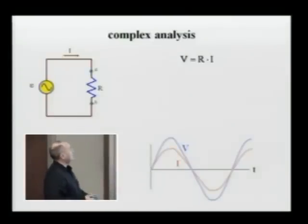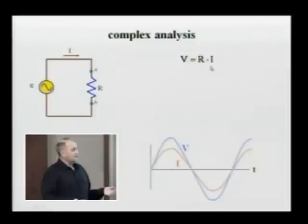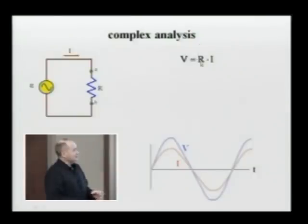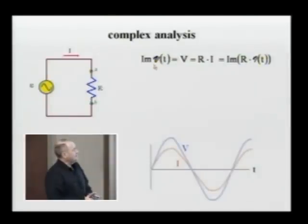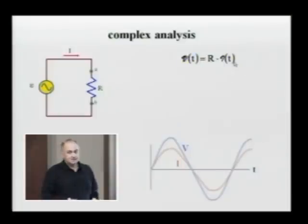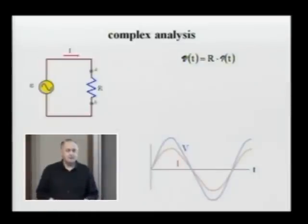Using complex analysis, I will think about complex current and complex voltage. I recognize that voltage across the resistor is the imaginary part of the complex voltage, and current is the imaginary part of the complex current. Since R is a real number, I can write that this is the imaginary part of the complex voltage, and since R is real it doesn't matter if R is inside or outside the imaginary part. So complex voltage is equal to resistance multiplied by complex current.